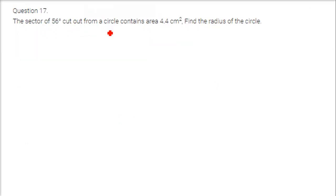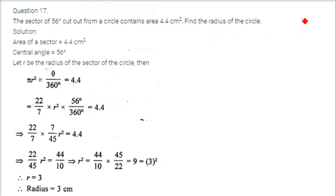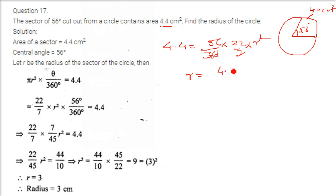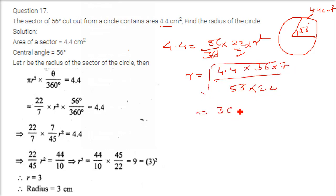A sector of 56 degrees cut out from a circle contains area 4.4 cm square. Find the radius of the circle. Using area equals theta by 360 into pi r squared: 4.4 equals 56 by 360 into 22 by 7 into r squared. Solving, r squared equals 4.4 into 360 into 7 divided by 56 into 22, and taking the square root gives r equals 3 cm.